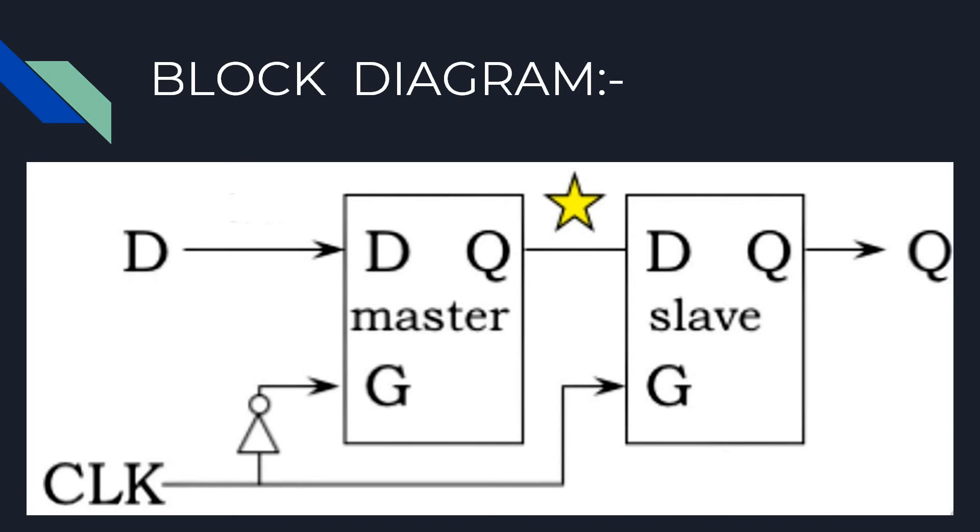the master latch goes from open to closed, sampling the value on its input and entering memory mode. The sampled value thus becomes the output of the latch as long as the latch stays closed.